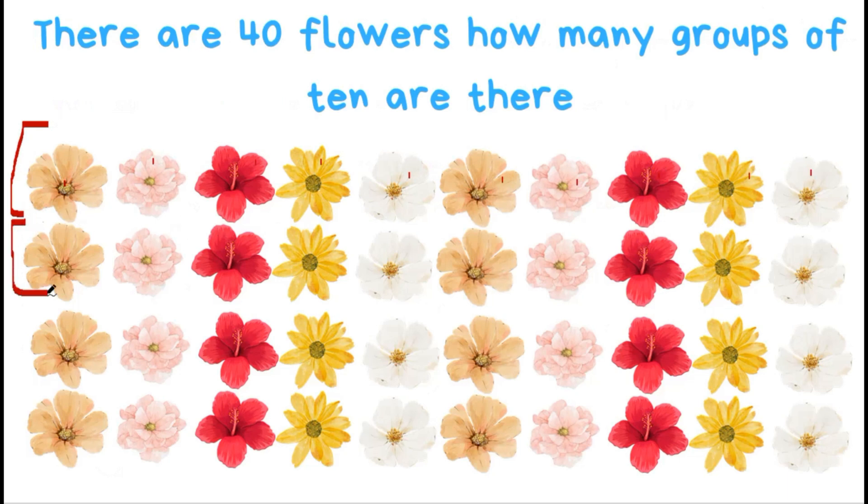That's 1, 2. Group 3: 1, 2, 3, 4, 5, 6, 7, 8, 9, 10. That's 3. And 4. Group 4: 1, 2, 3, 4, 5, 6, 7, 8, 9, 10. That means 4 groups of 10 make 40.